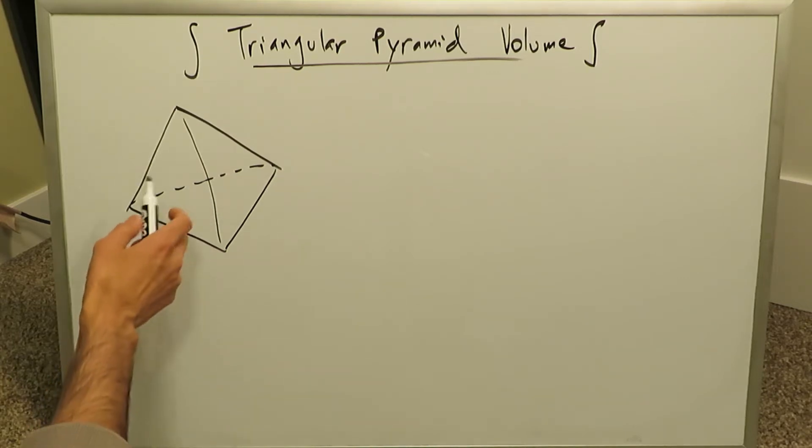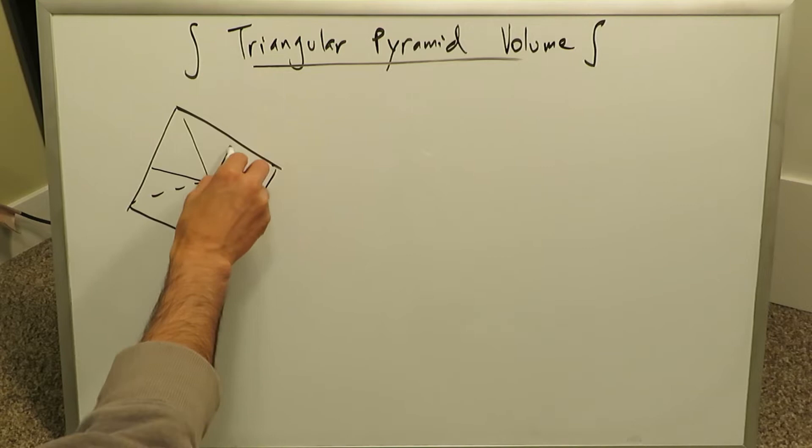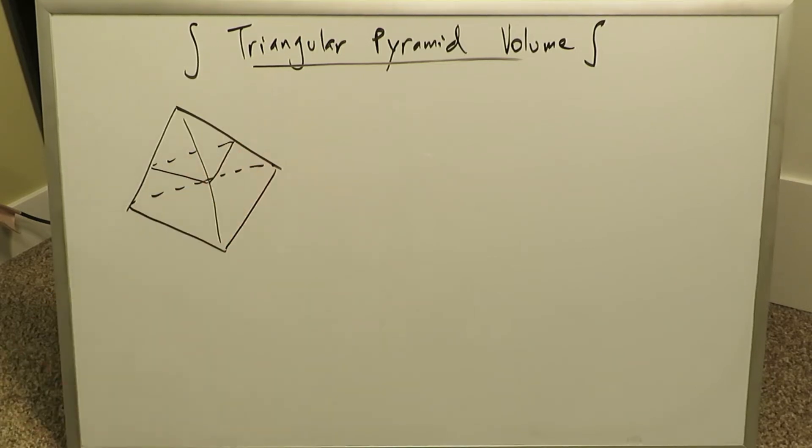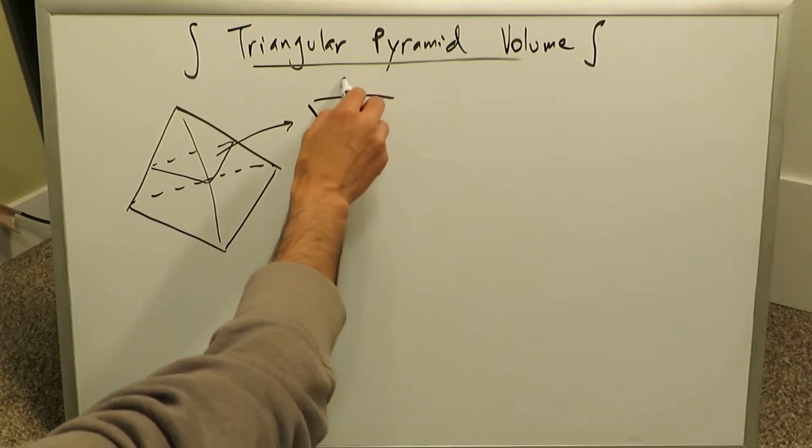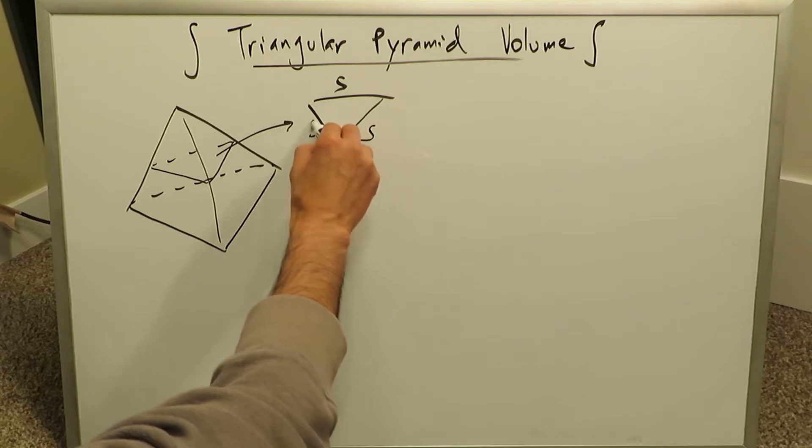When you're looking at this solid over here, it's a cross-section that develops in this manner over here, and that cross-section is always a triangle. If you pluck out this triangle, it looks something like this.